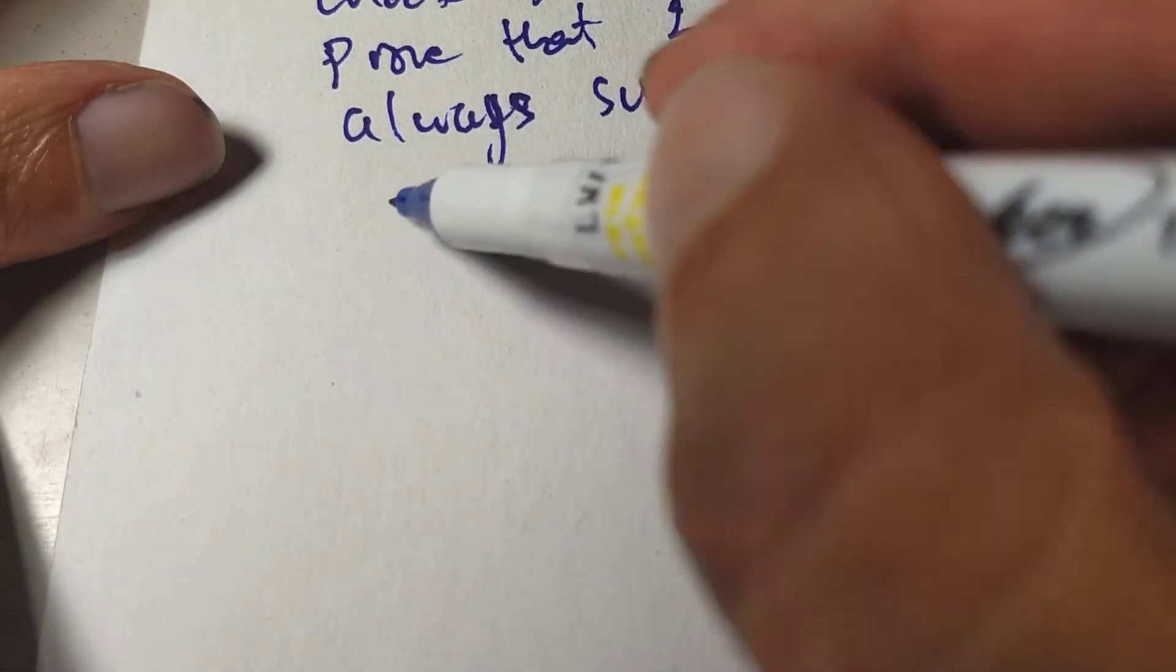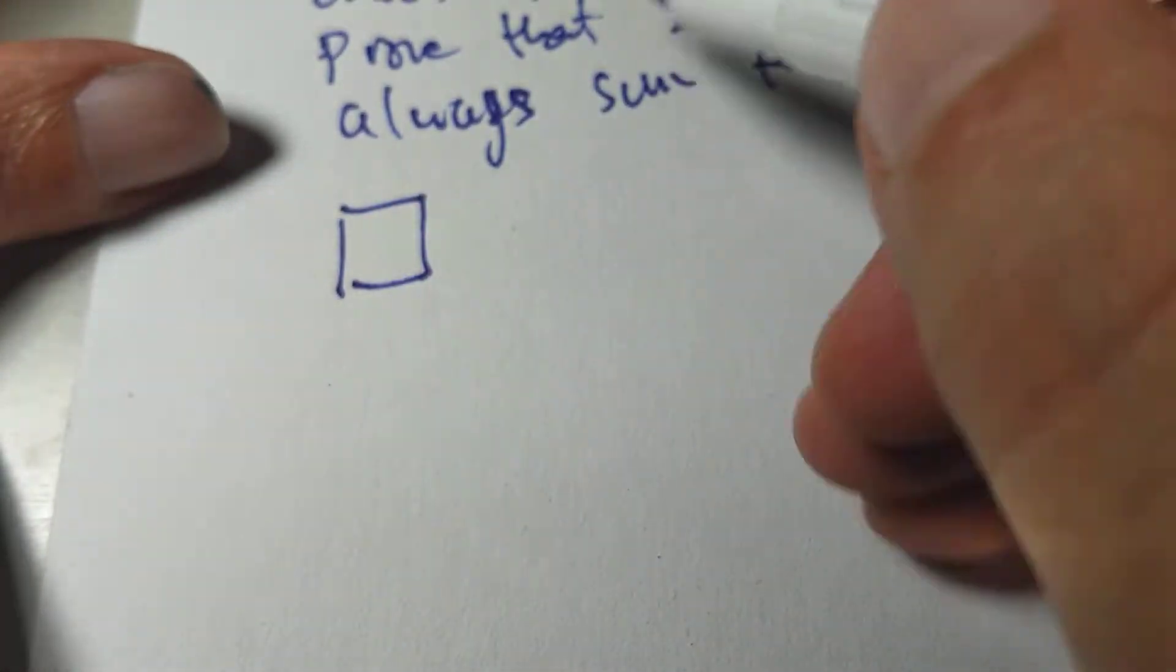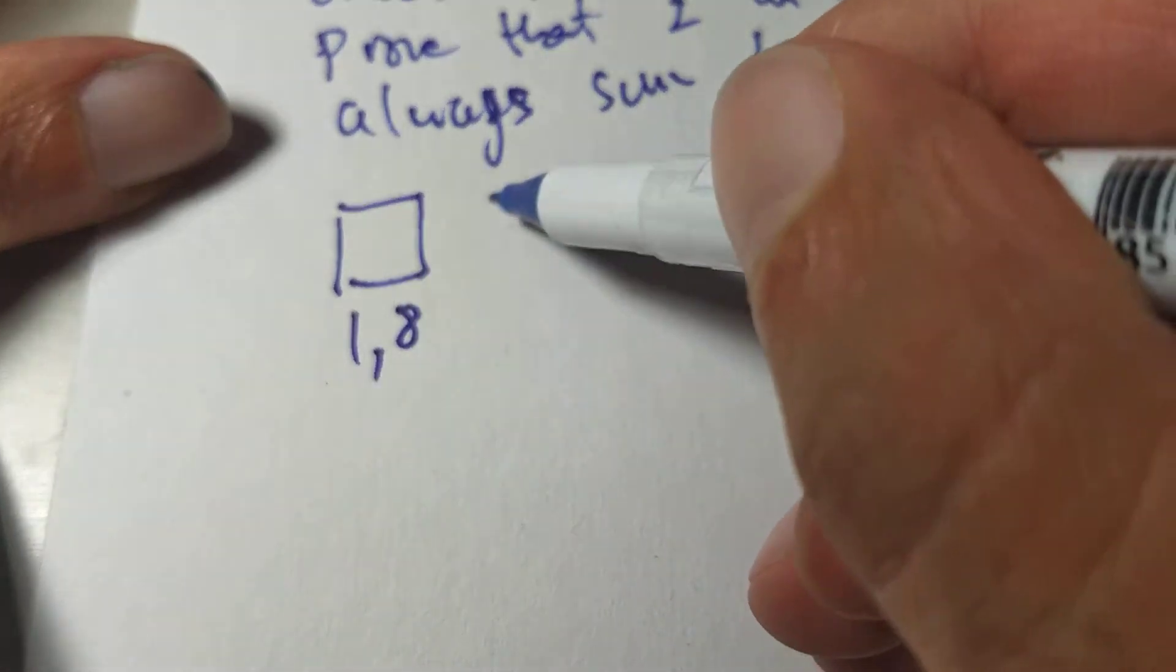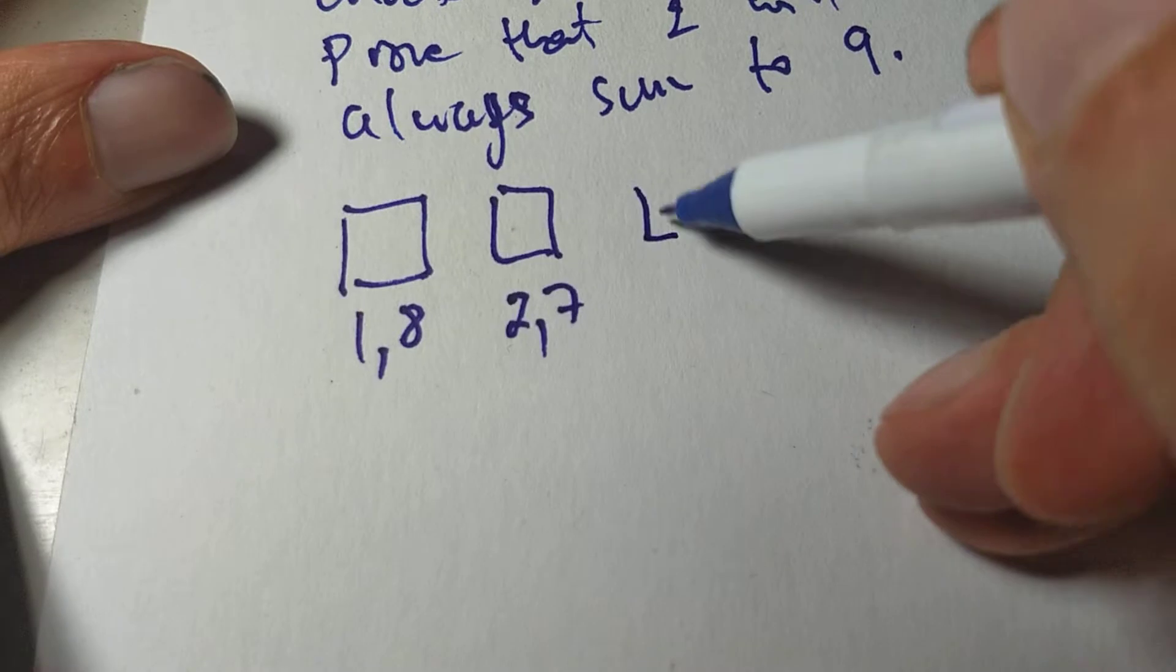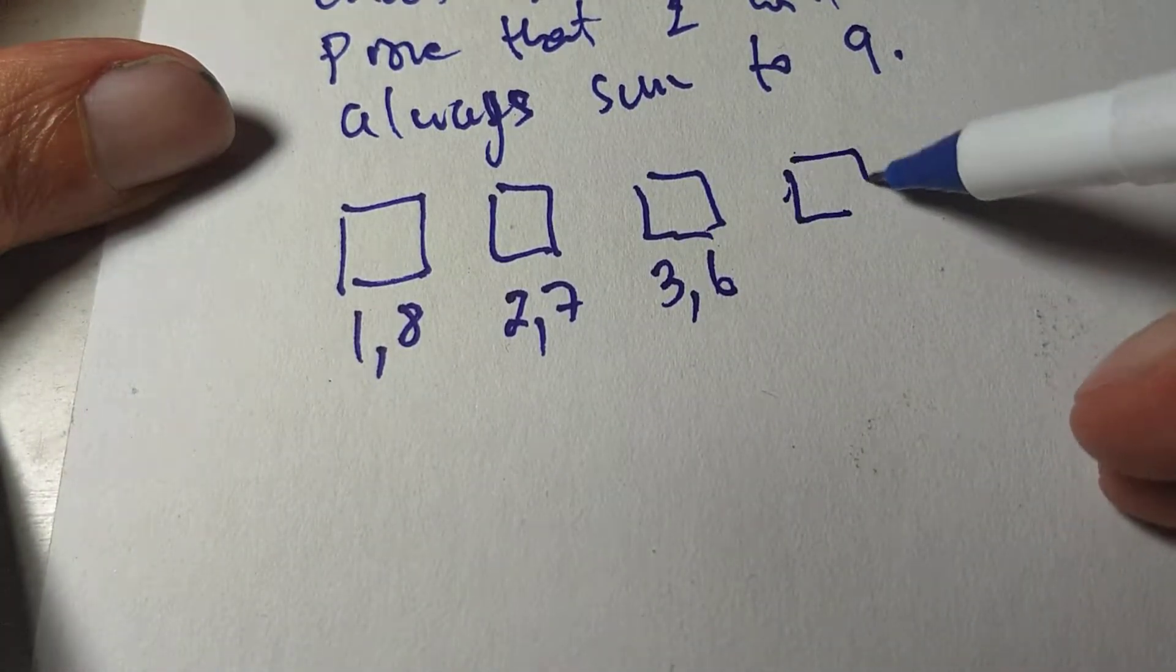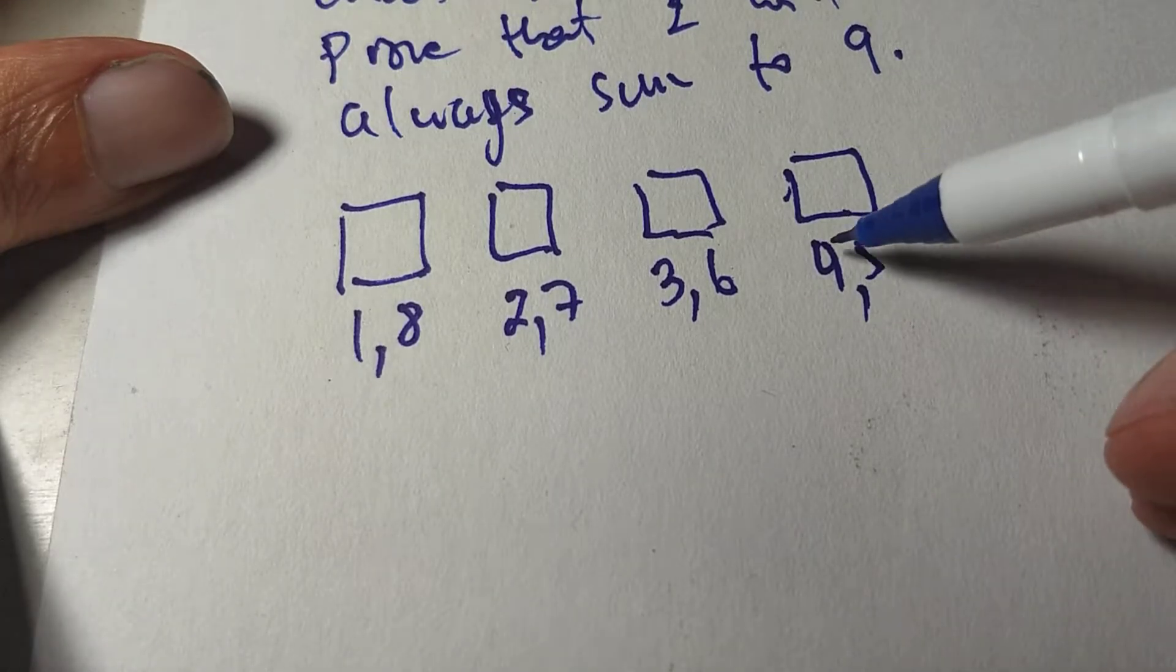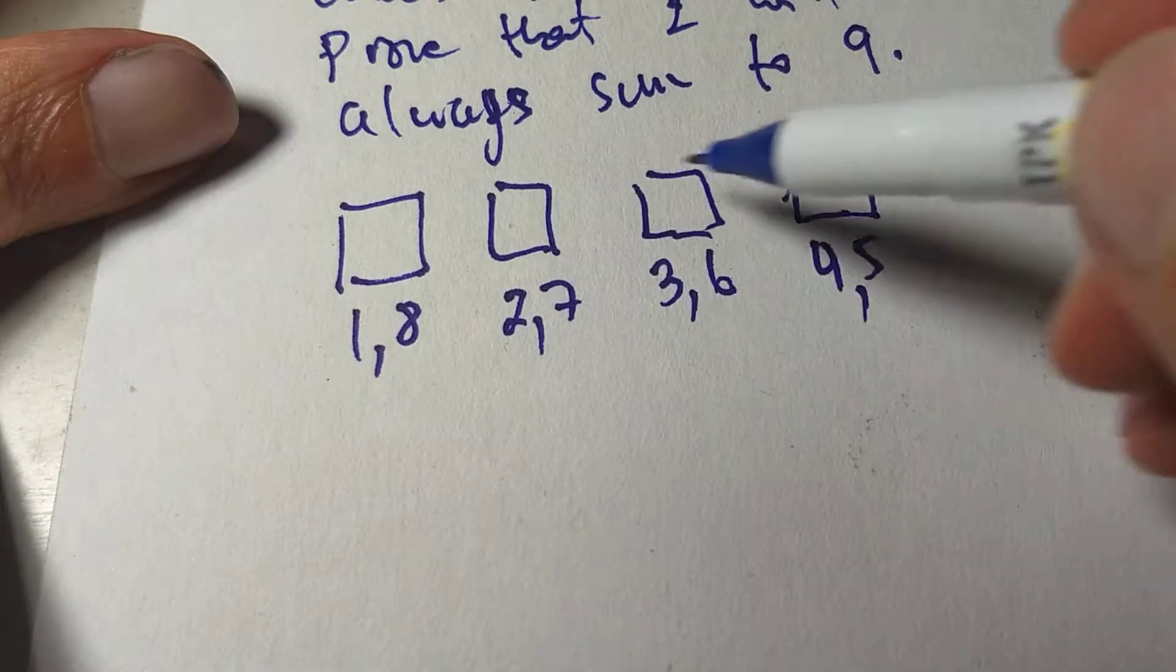So let's see how this works. Let's put together some boxes. Let's try different ways to make nine. I can have one eight, and I can have two seven, and I can have three six, and I can have four five. But then in the next one, five four is the same as four five. So really, I have only four boxes.